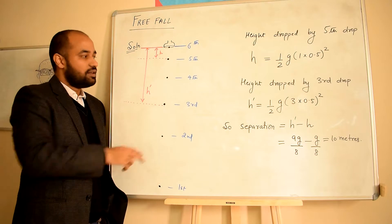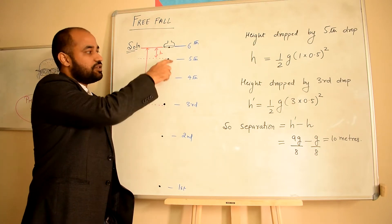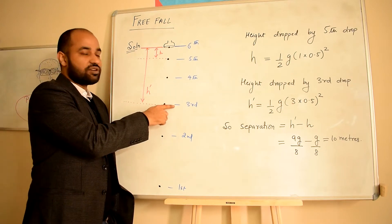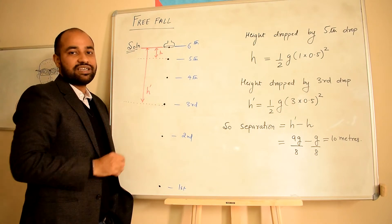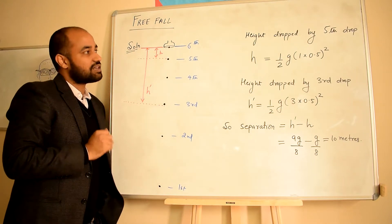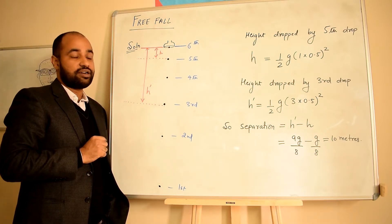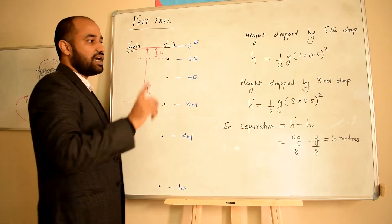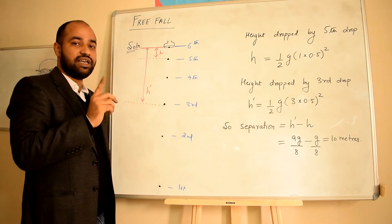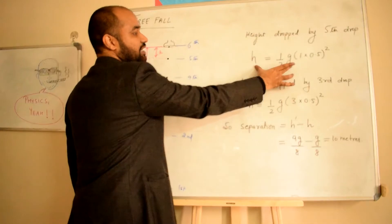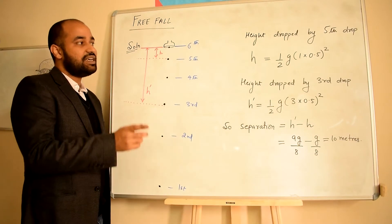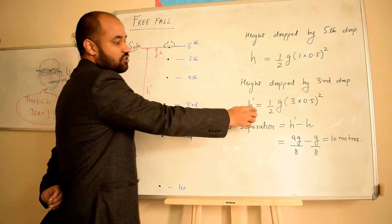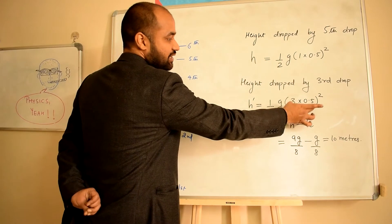By using the free fall formula, when the sixth drop falls, the fifth drop has dropped h = ½g(1 × 0.5)². Similarly, if you have 3 intervals, then the third drop has h' = ½g(3 × 0.5)².